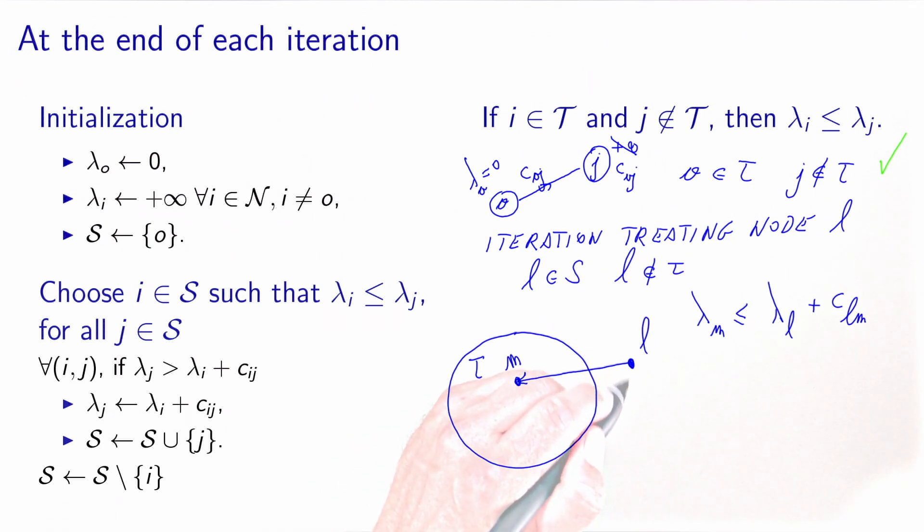So let's assume that the iteration now treats an arc that goes to a node P, which is not in T. Two things can happen. Either lambda P is less or equal to lambda L plus C_LP. But in that case, the algorithm will not do anything. And all the labels will be the same. There is no modification. So whatever property was holding before, it will hold afterwards.